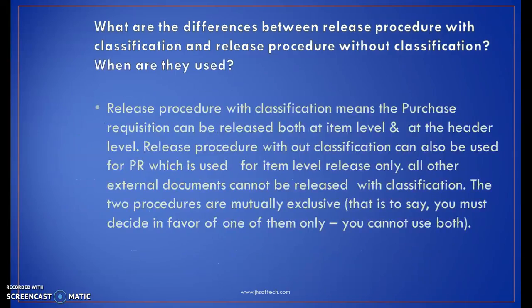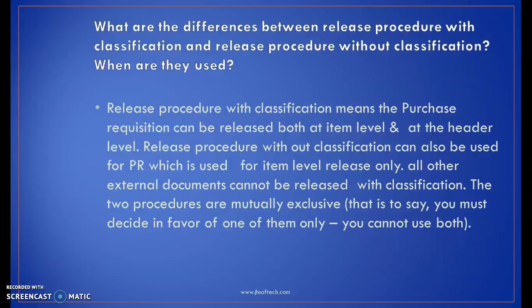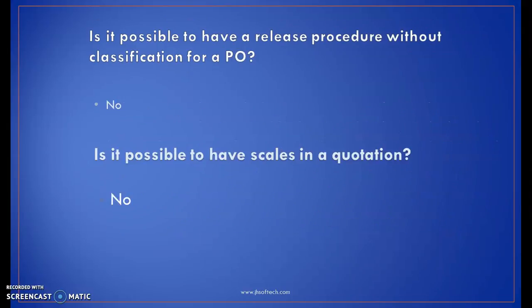What are the differences between release procedure with classification and without classification, and when are they used? Release procedure with classification means the purchase requisition can be released both at item level and at header level. Release procedure without classification can also be used for purchase requisition but is used for item-level release only — you cannot release it at header level. All other external documents cannot be released without classification. The two procedures are mutually exclusive — you must decide in favor of one of them. Is it possible to have a release procedure without classification for a PO? No. Is it possible to have scales in a quotation? No, we cannot have scales in a quotation.